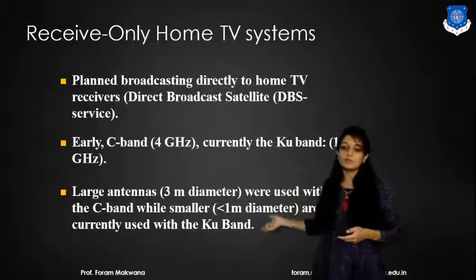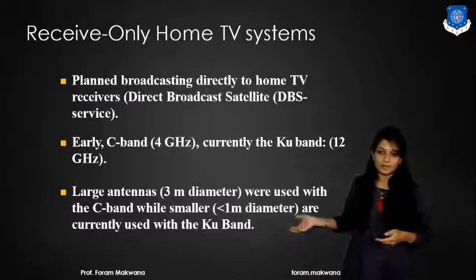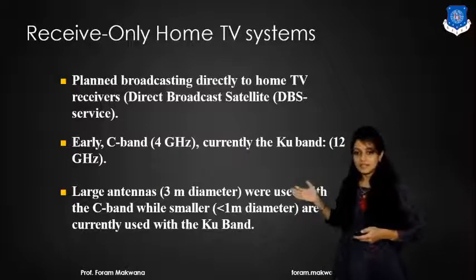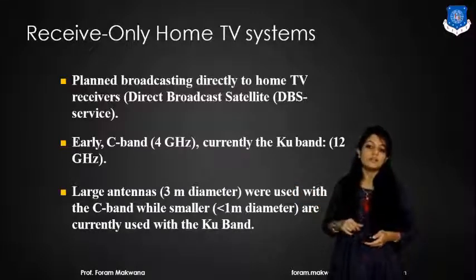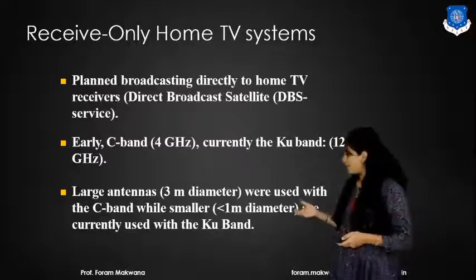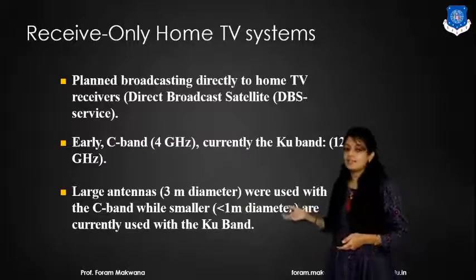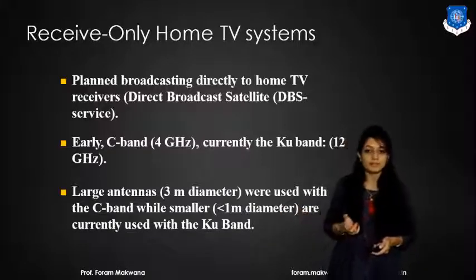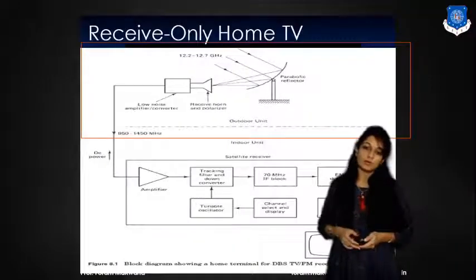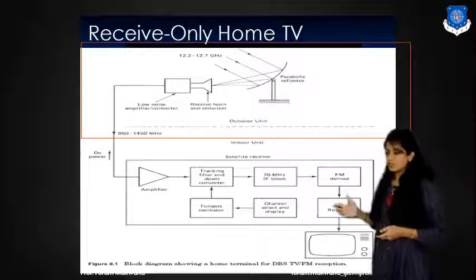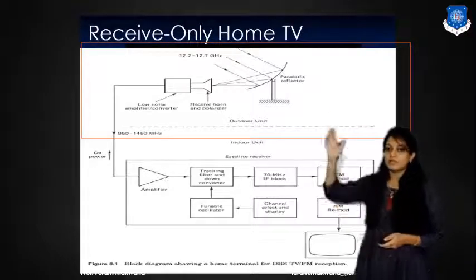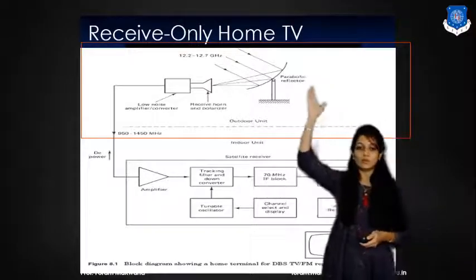Right now, we are going to use the K band. That is why a large antenna is used with the C band, and the smaller antennas with a diameter of less than 1 meter are used with the K band. Now, what is the block diagram? This figure shows the block diagram of the receive-only home TV system.